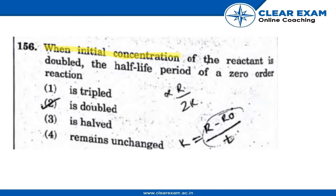When initial concentration of the reactant is doubled, the half-life period of a zero-order reaction is: tripled, is doubled, is halved, or remains unchanged.